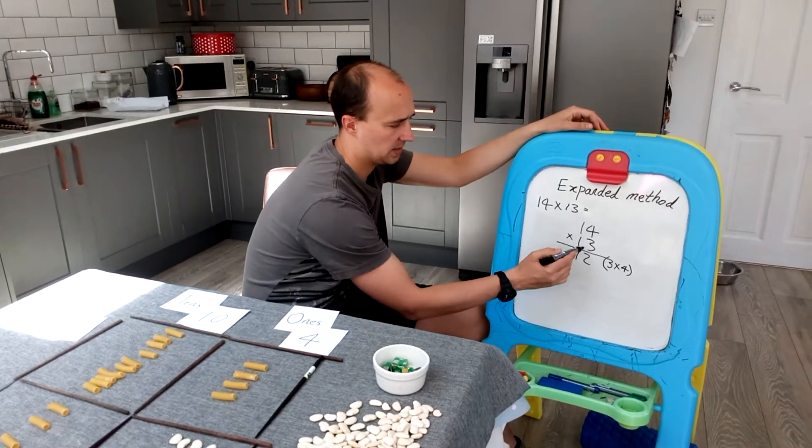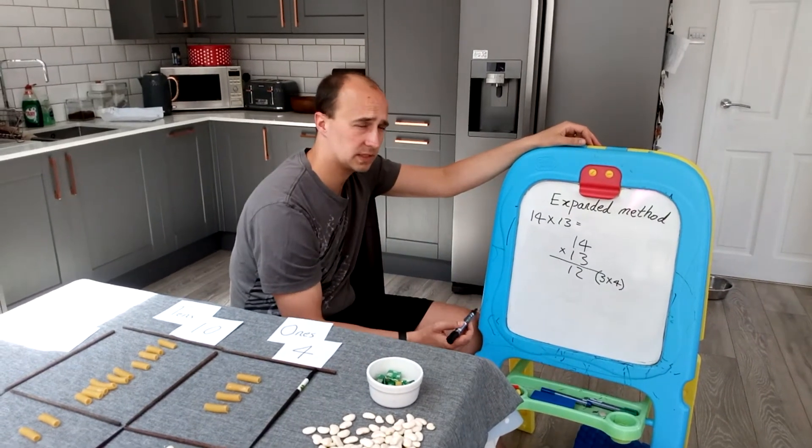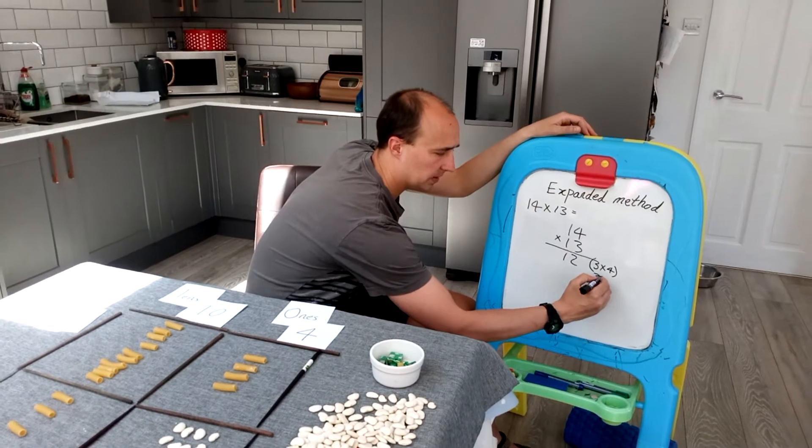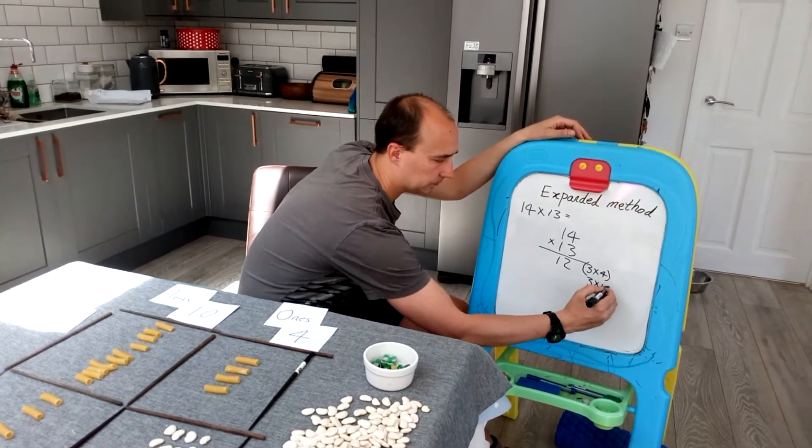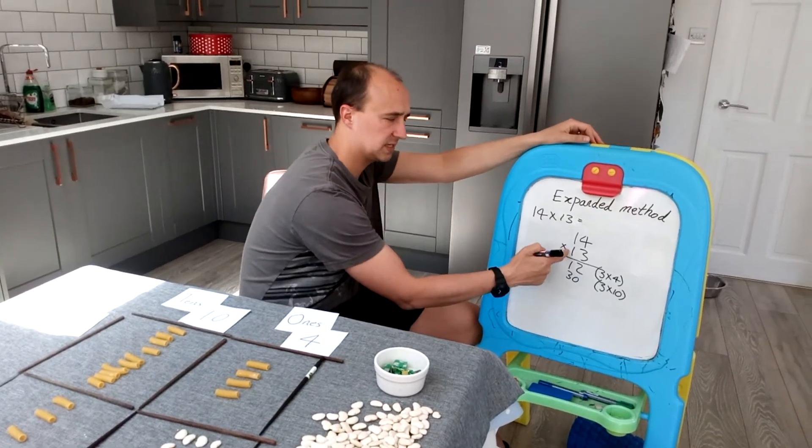And then I'm going to do 3 times 1. It looks like a 1, but it's actually a 10, so just remember that. It's really important that they remember their place value knowledge. So it's 3 times 10, which is 30. Then you're going to move over onto the 10s column.